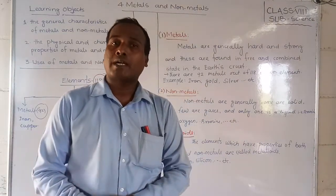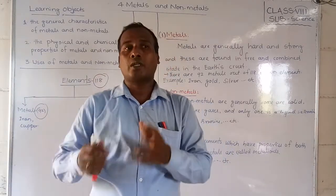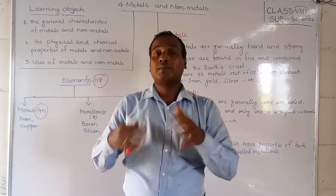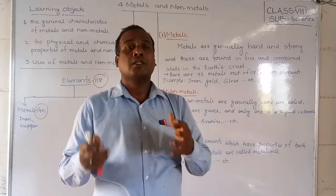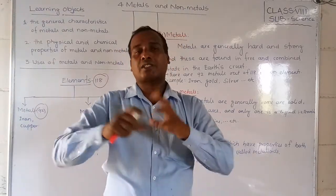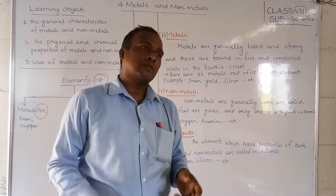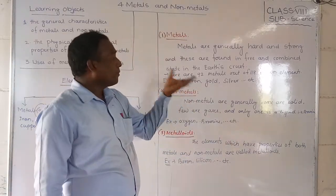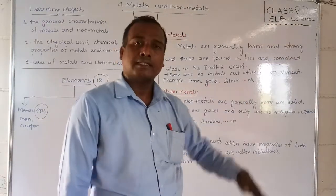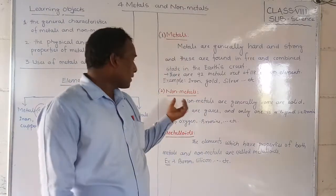Some metals are found in combined state. For example, iron is found in bauxite — bauxite is an ore of iron. In that ore, iron is mixed with other elements, and through extraction methods we obtain the pure iron. So metals can be found in free state or combined state. Examples of metals include iron, gold, silver, and so on.